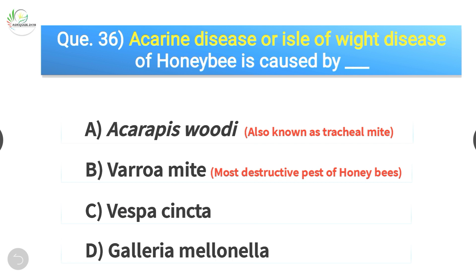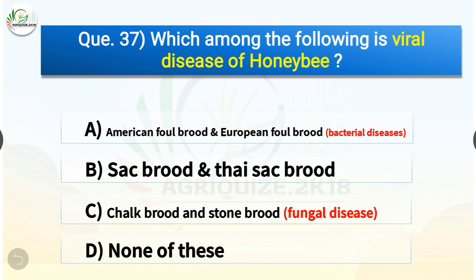Question number thirty-seven: Which among the following is a viral disease of honeybee? The options are: American foulbrood and European foulbrood, sacbrood and Thai sacbrood, chalk brood and stone brood, or none of these. The correct answer is option B — sacbrood and Thai sacbrood. American foulbrood and European foulbrood are bacterial diseases. Chalk brood and stone brood are fungal diseases.